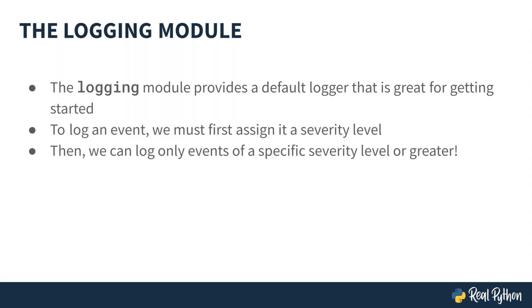The logging module provides a default logger that is great for getting started. We'll talk more about loggers later, but for now just know that a logger defines how a program should log. To log an event, we must first assign it a severity level, which represents how severe the event is. Then we can log only events of a specific severity level or greater, which will help us maintain clean logs that don't contain unnecessary events.